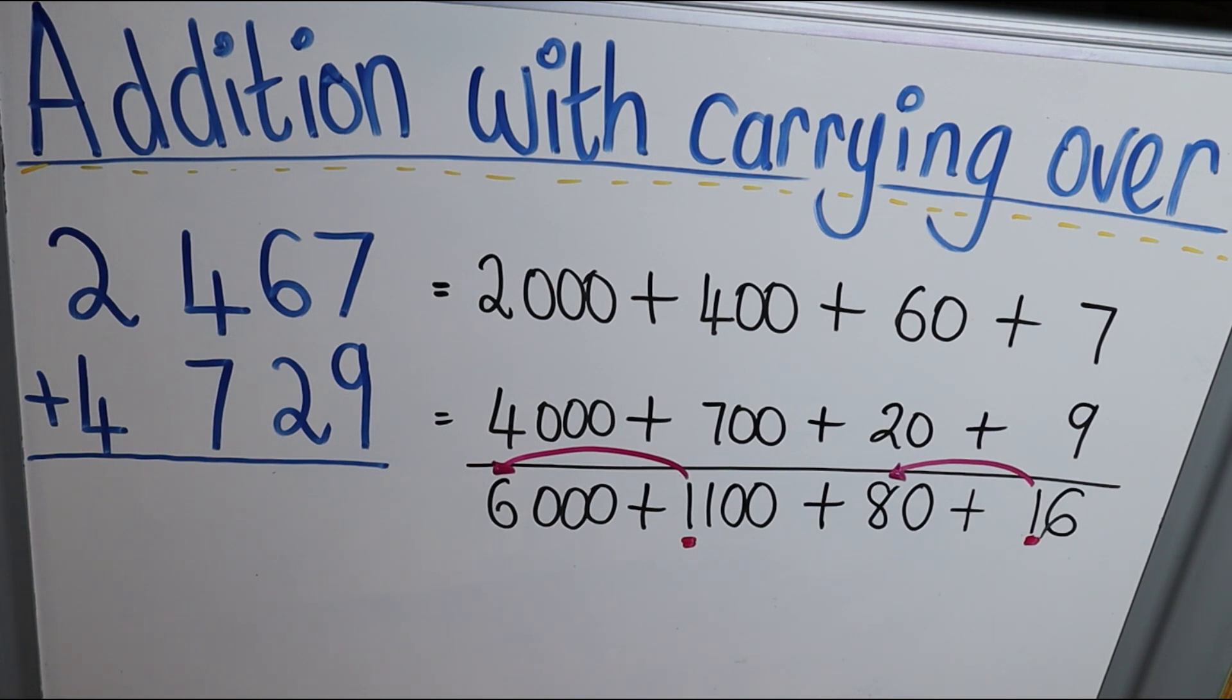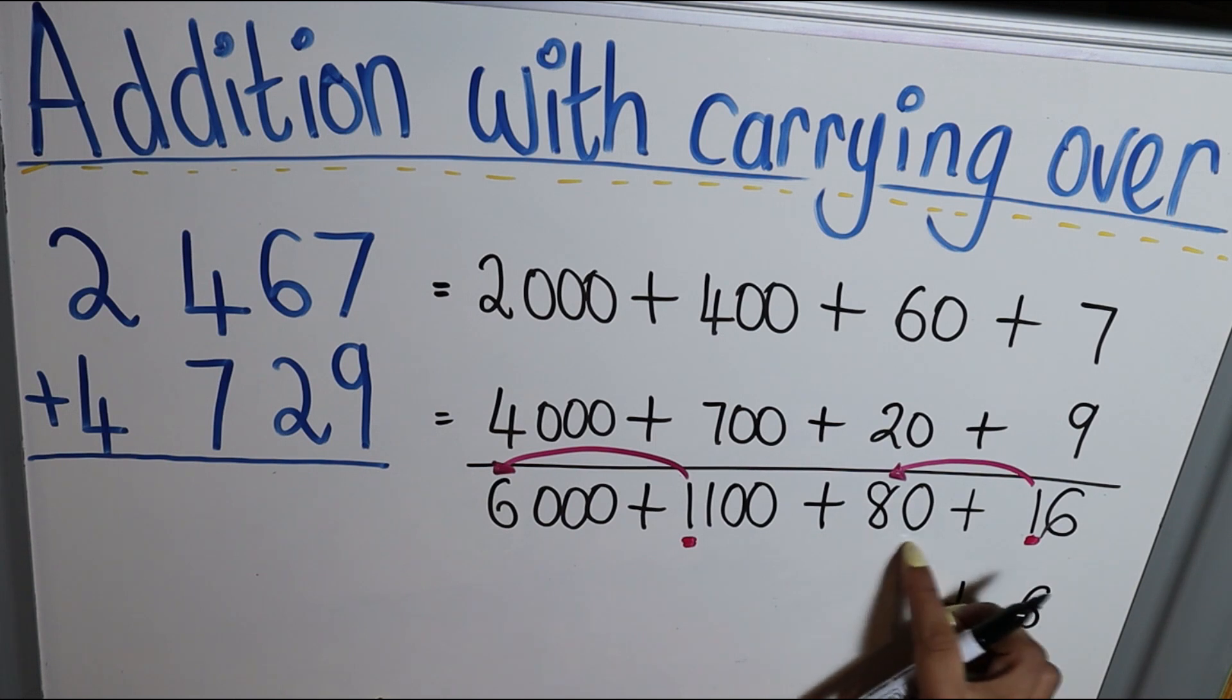Automatically, then I am left with in my units a 6, plus that 10, plus that 80, which makes it a 90.